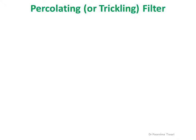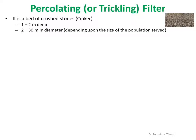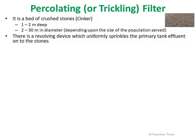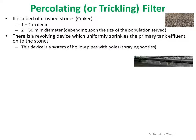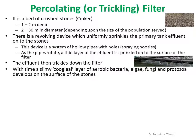The two methods of aerobic oxidation: the first is the percolating filter, or trickling filter. A percolating filter is a bed of crushed stones around 1–2 meters deep, with diameter depending on the population to be served. A revolving device uniformly sprinkles the primary tank effluent onto the stones — a system of hollow pipes with holes through which sewage is sprayed onto the surface of the bed. As the pipes rotate, a thin layer of effluent is sprinkled onto the filter surface and then trickles down. A zoogloeal layer forms on the surface of the stones, consisting of aerobic bacteria, algae, fungi, and protozoa.